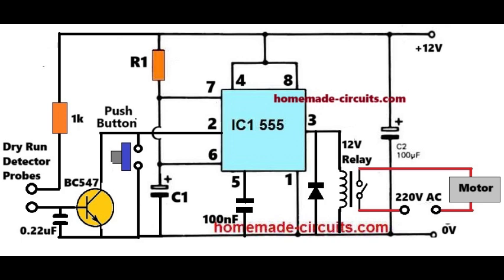In this pump motor controller circuit, the motor is started or switched on manually by the user by pressing the given push to on switch. This activates the IC monostable timer causing its pin number 3 to become high, so that the attached relay is activated. The relay now switches on the pump motor.